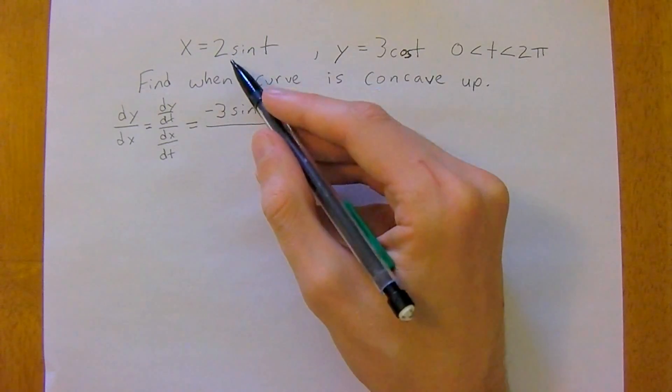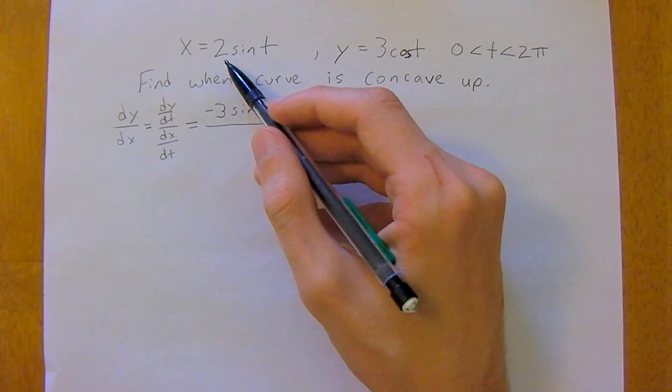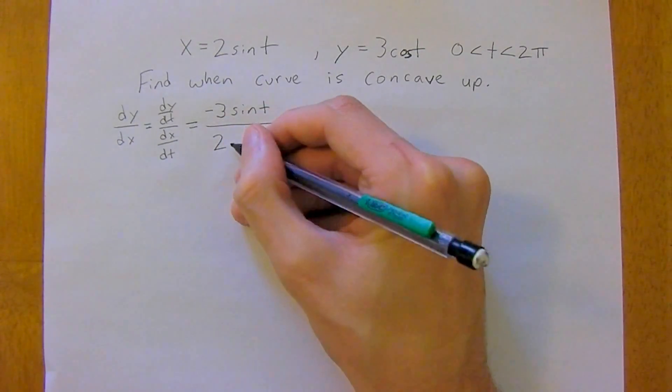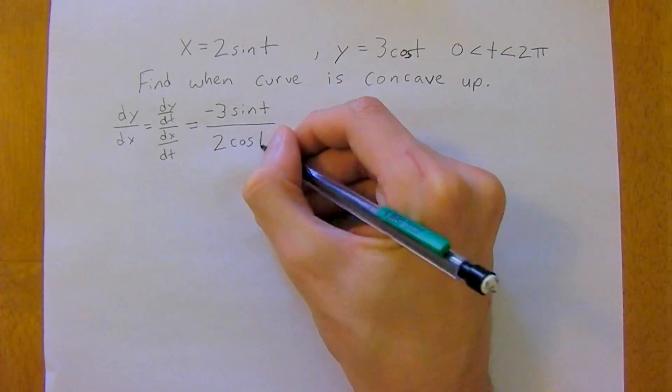And then the derivative of x equals 2 sine t, the derivative of sine is cosine, so on the bottom here we're just going to get 2 cosine t.